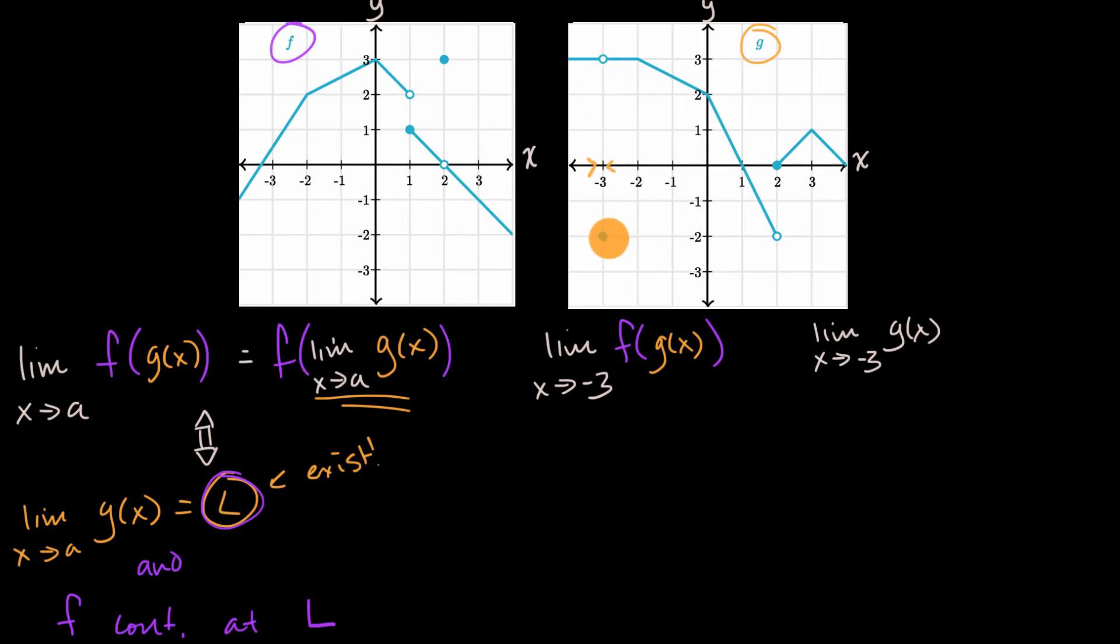Even though the value g of negative three is negative two, it's a point discontinuity. As we approach it from either side, the value of the function is at three. So this thing is going to be three. So it exists. We meet that first condition.